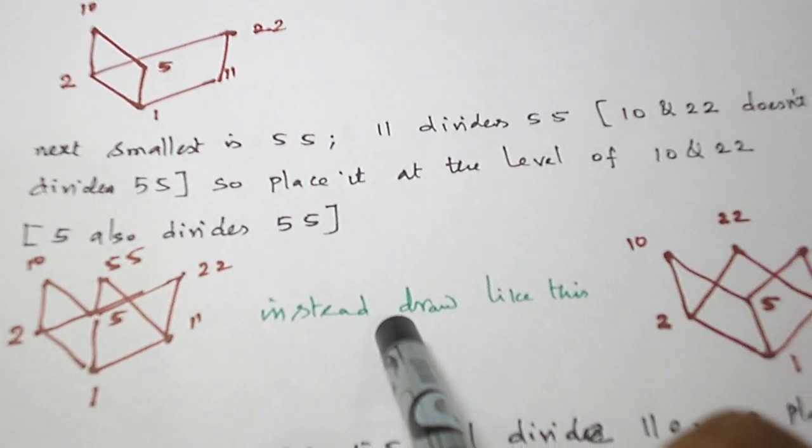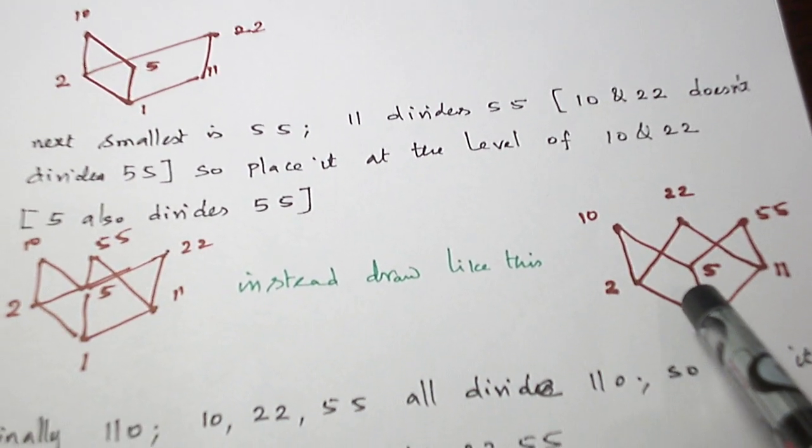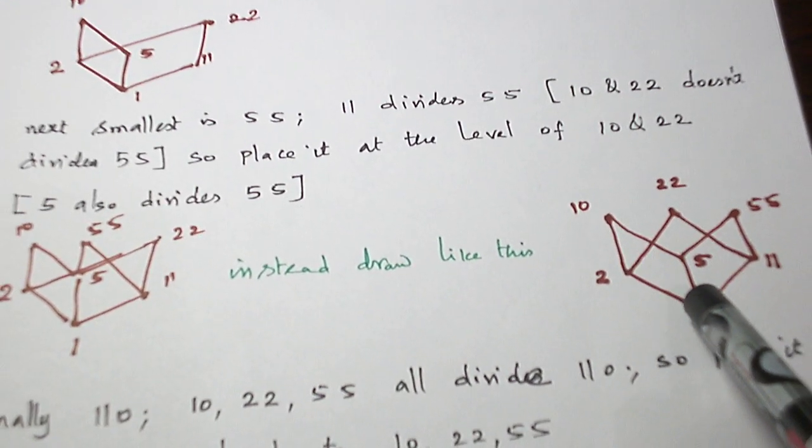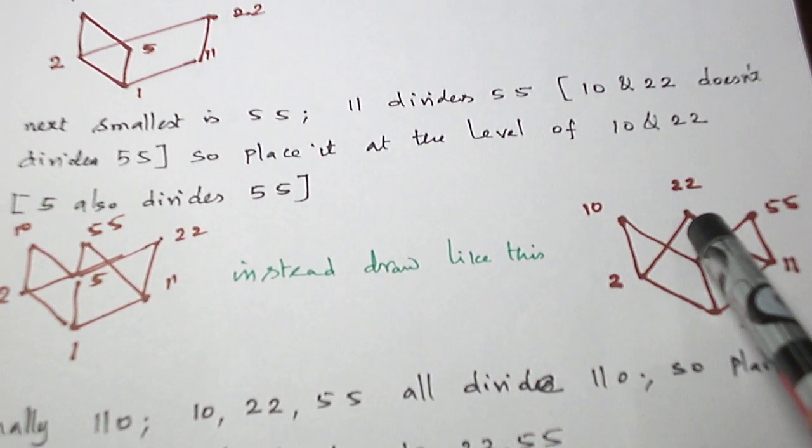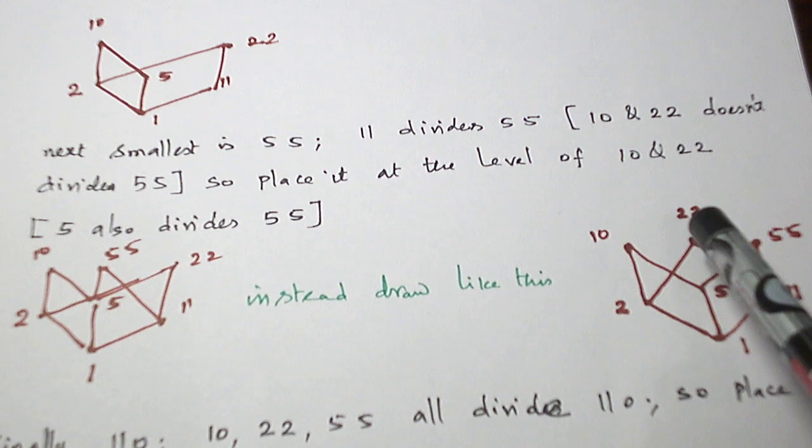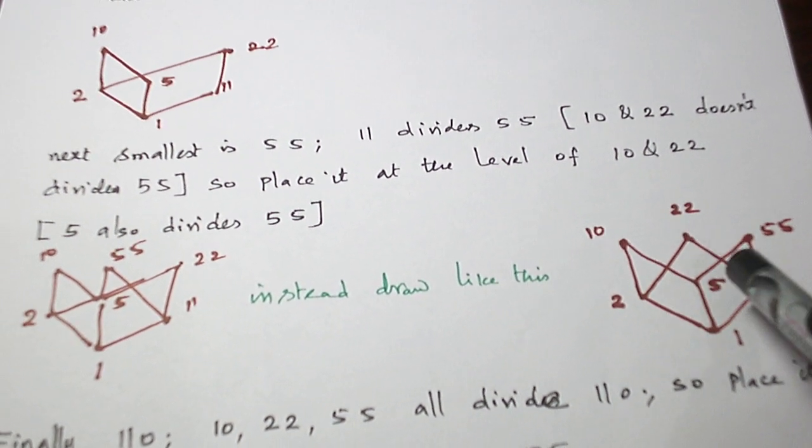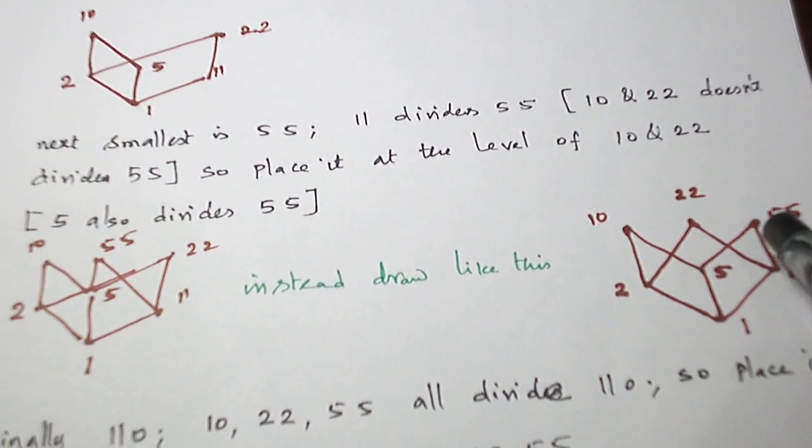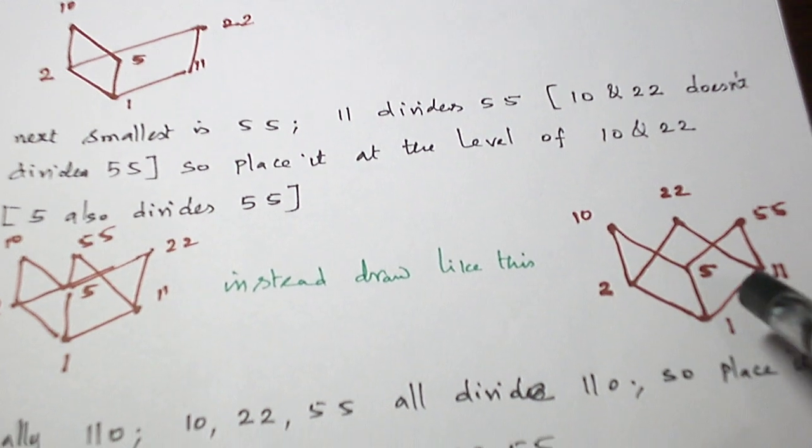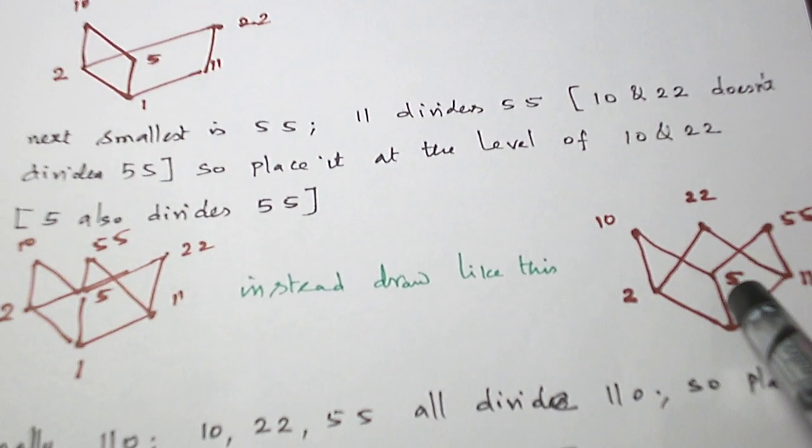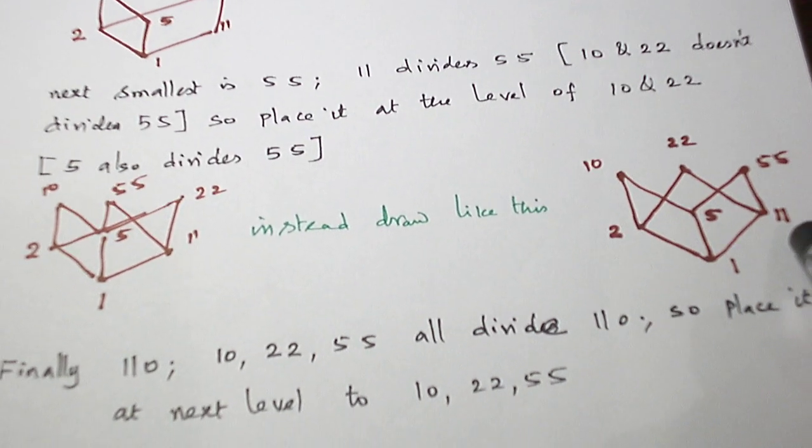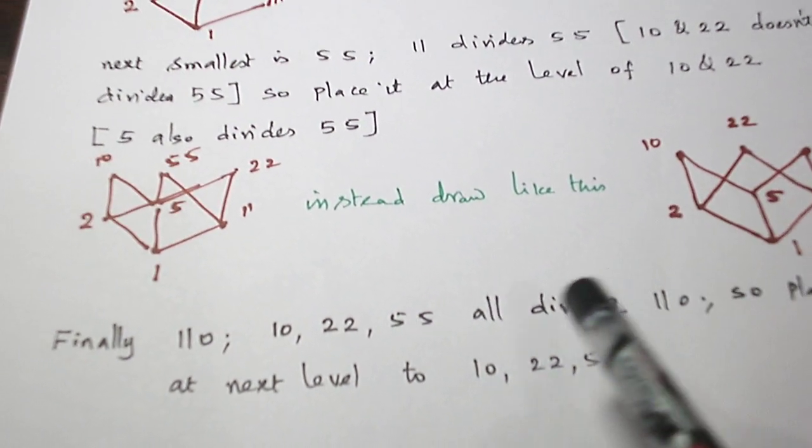Now, instead of drawing like this, I draw like this so that I will get a nice format. 22 is placed in between 10 and 55. 2 divides 22, 11 divides 22, 5 divides 10, 5 divides 55, and 2 divides 10, 5 divides 10, like that we are taking.